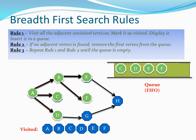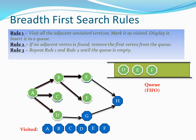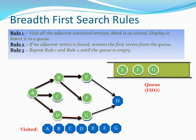From B we don't have any other adjacent vertices, so we apply rule two and remove vertex B from the queue. Now we have C, D, E, F in our queue. Next to process is C. From C, we don't have any adjacent vertices, so as per rule two we can remove it from the queue. Next in our queue we have D. From D, we have one unvisited vertex, so as per rule one we can visit it. D now doesn't have any other vertices, so as per rule two we remove D from the queue.